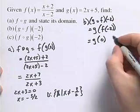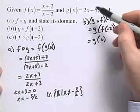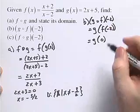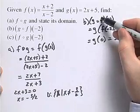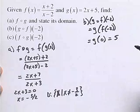So we need g of 0. So now we come to our function g, plug in the value 0. 2 times 0 plus 5 is equal to 5. So g of f of negative 2 is equal to 5.